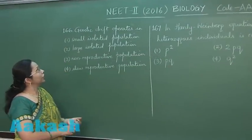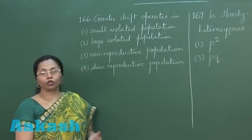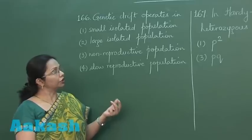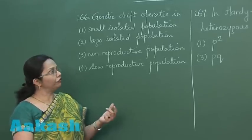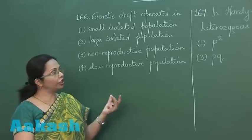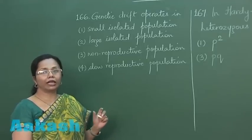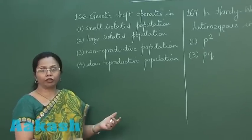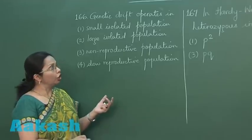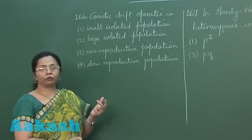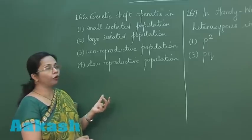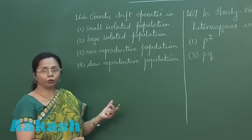Now in this question, genetic drift operates in... Genetic drift is an evolutionary mechanism where a chance event in a small isolated population can lead to loss of certain alleles and fixing of some non-adaptive or neutral alleles. The effect of genetic drift can be seen only in a small population.